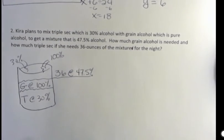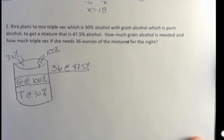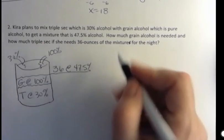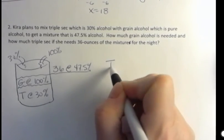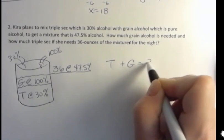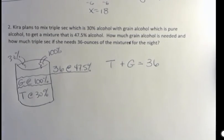So our two equations, like we saw before, the first one just has to do with how many ounces does she need? Well, she has T plus G equals 36 ounces. That's how many ounces she wants. And then we're going to take each of those and multiply it times our percentage.